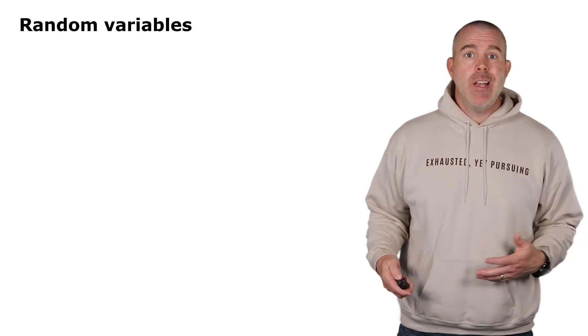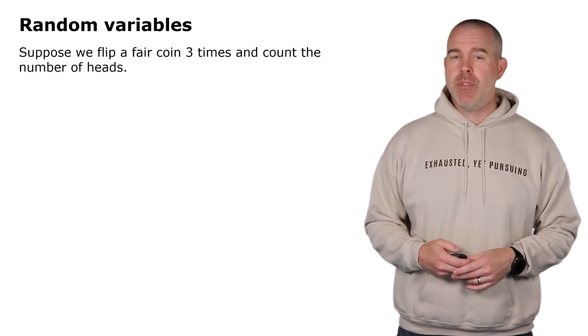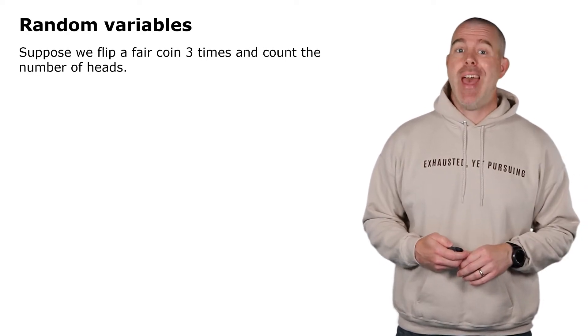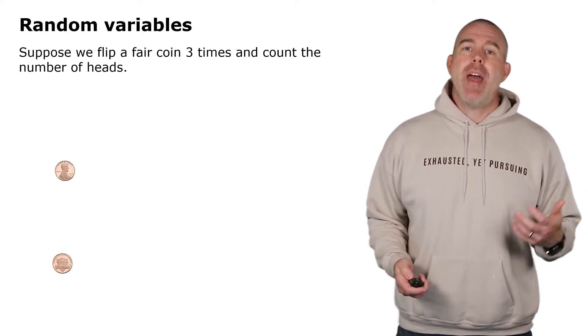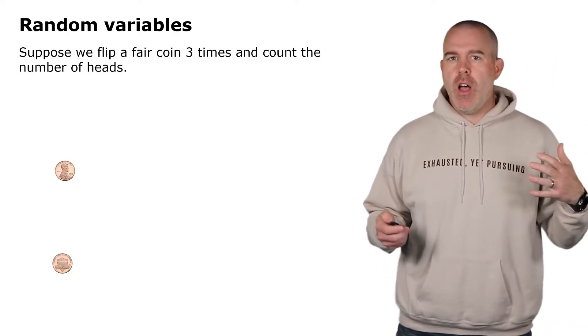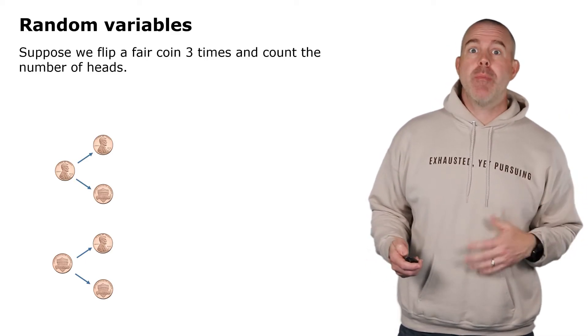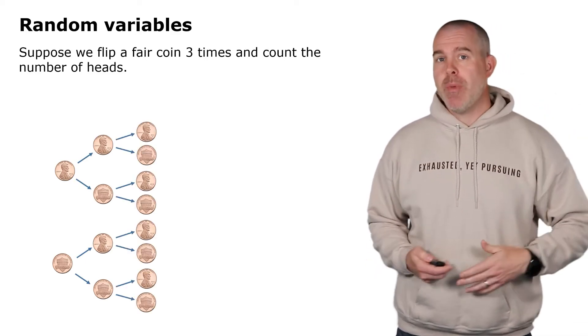Like most topics, we're going to introduce this concept by way of an example. Suppose we have an experiment where we're flipping a fair coin three times and we are counting the number of heads. The first flip could be either a head or a tails, and if we draw a little tree diagram, then for each of those there can be a head or tails, and then for each of those there can be a head or tails.